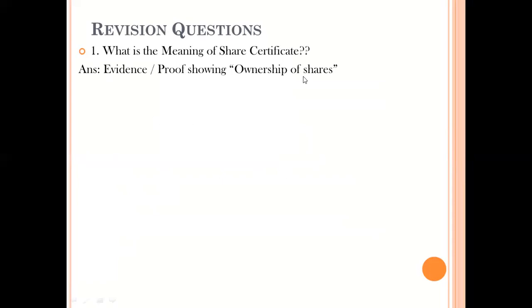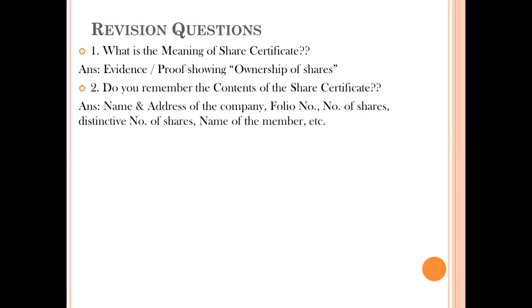It is a document issued to a person which specifies their title to the shares. Basically, when you own certain shares of a particular company, the proof and evidence is the share certificate issued by the company under a common seal. Regarding the contents of the share certificate: it will include the name and address, the CIN of the company, the folio number, the number of shares allotted, the name of the member, and the distinctive number of shares — from which lot to which lot has been issued.